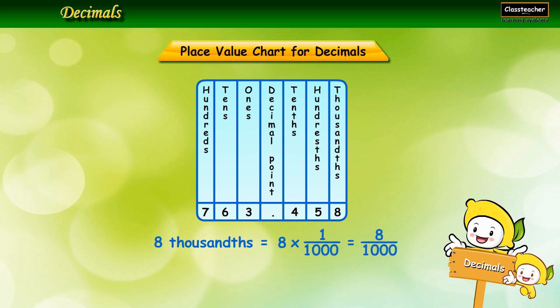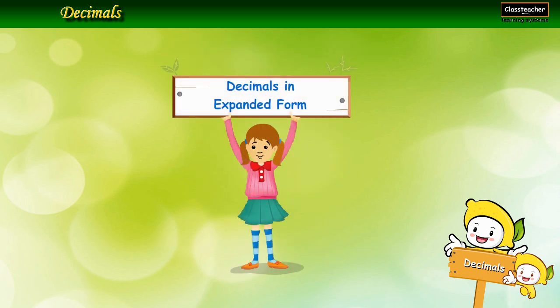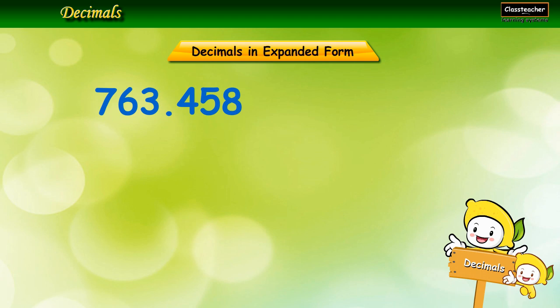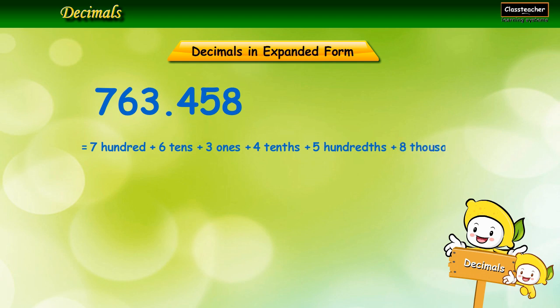Let's now learn how to write decimals in expanded form. 763.458 can be written as 700 plus 6 tens plus 3 ones plus 4 tenths plus 5 hundredths plus 8 thousandths, which equals 700 plus 60 plus 3 plus 4/10 plus 5/100 plus 8/1000.